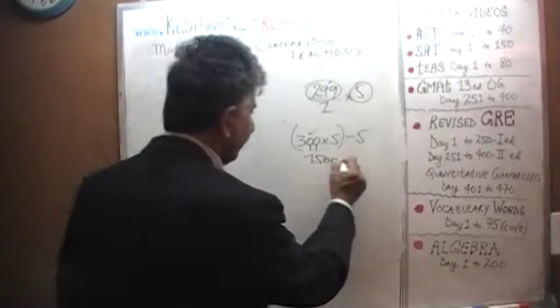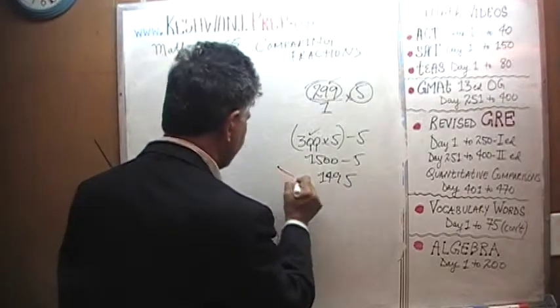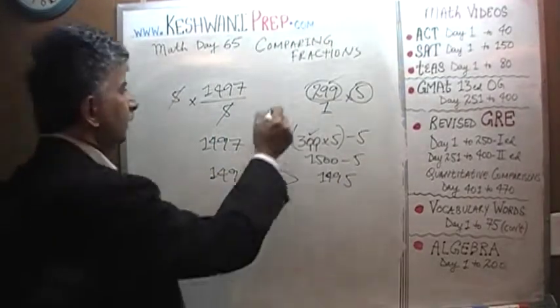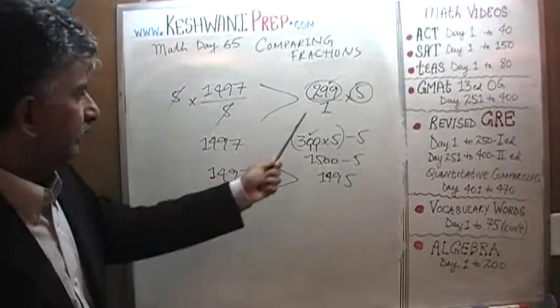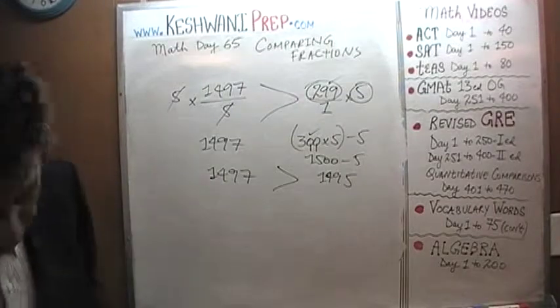1500 minus 5 is going to be 1495. And 1495 of course is less than 1497. Therefore 299 was less than 1497 over 5.